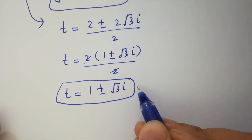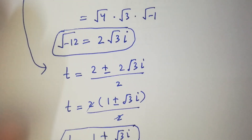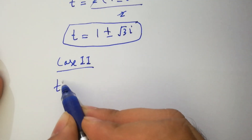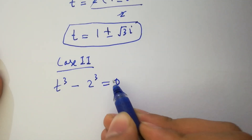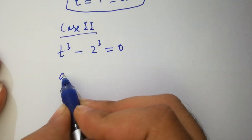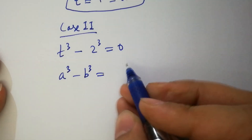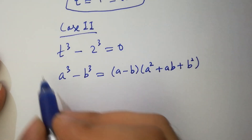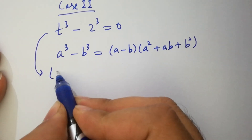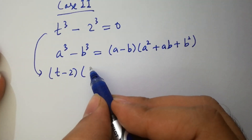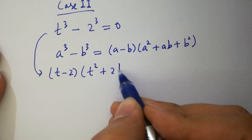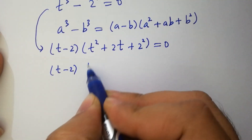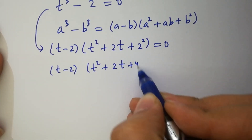Now moving to Case 2, which is t cubed minus 2 cubed equals 0. As we know, a cubed minus b cubed equals (a minus b)(a squared plus ab plus b squared). It will be (t minus 2)(t squared plus 2t plus 4) equals 0.